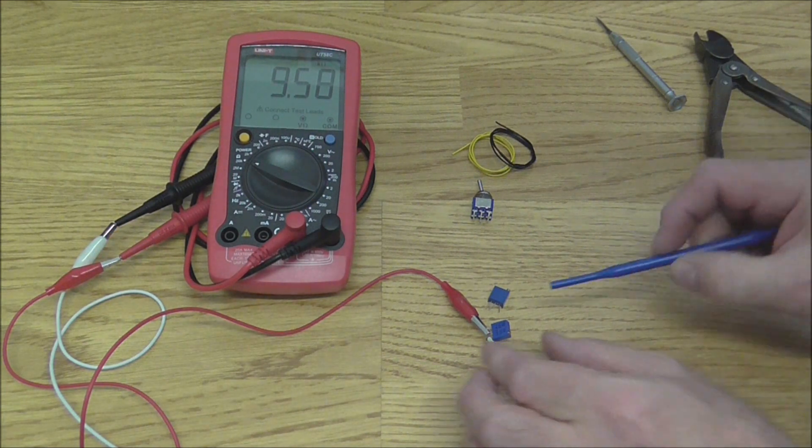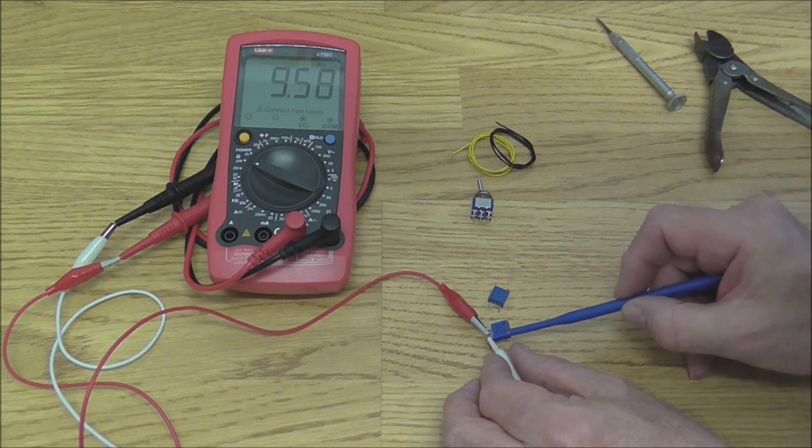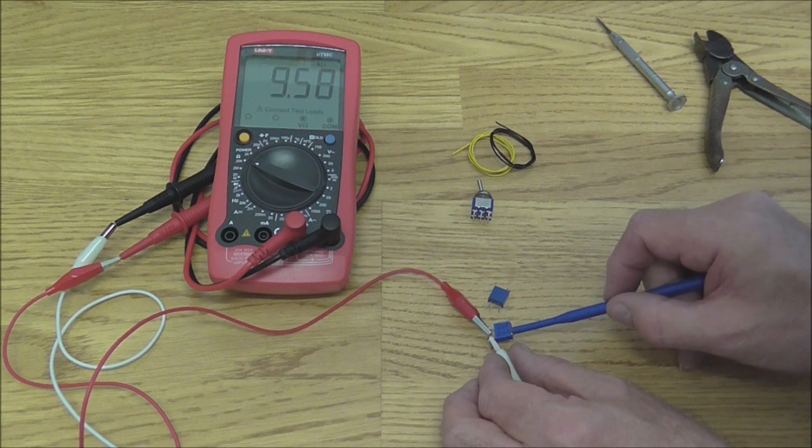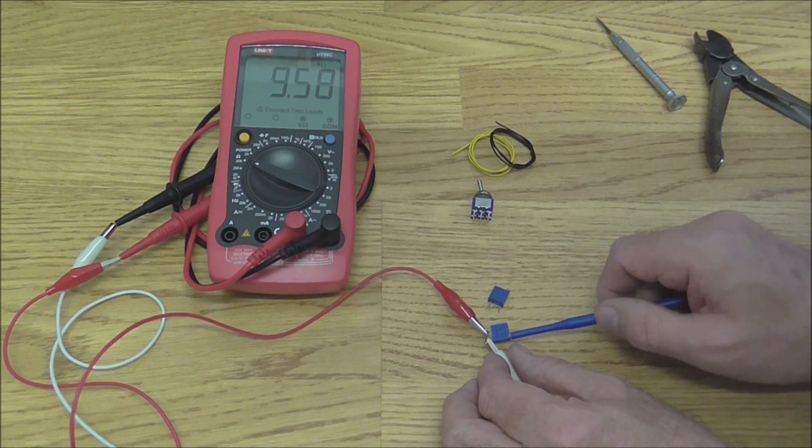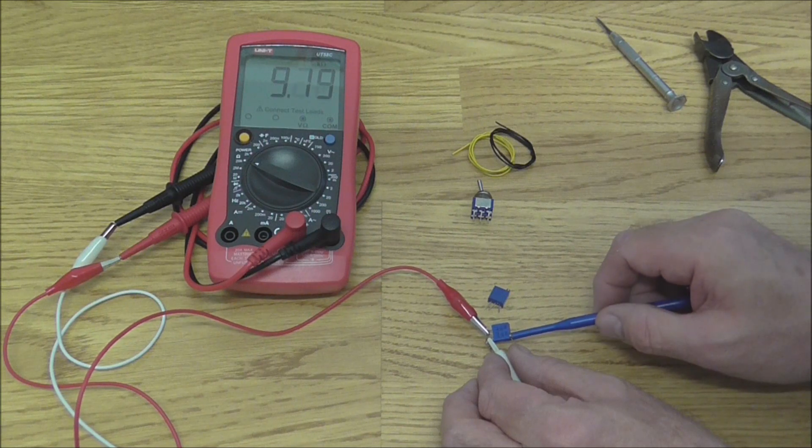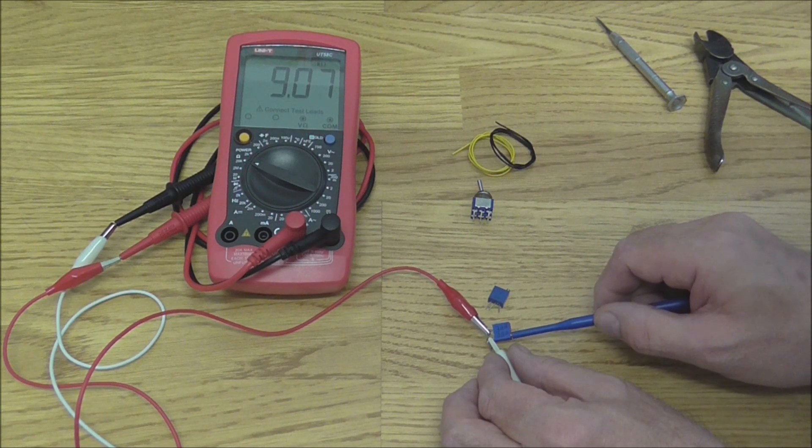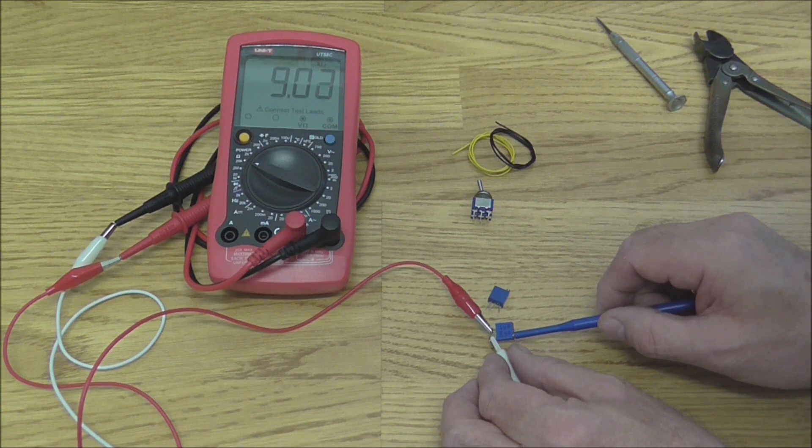Now adjust both preset resistors so they read approximately 9k on the meter. Adjusting the screw clockwise will increase the resistance and anti-clockwise will reduce the resistance.